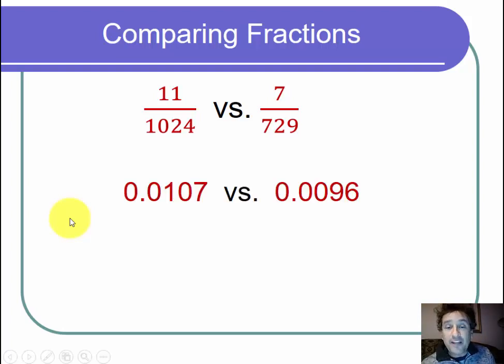Accurate to four decimal places, I got 0.0107 for the 11 over 1024. I got 0.0096 for the 7 over 729.